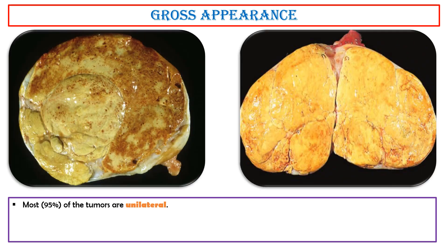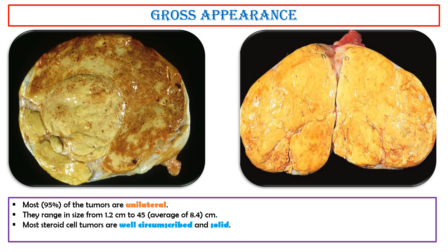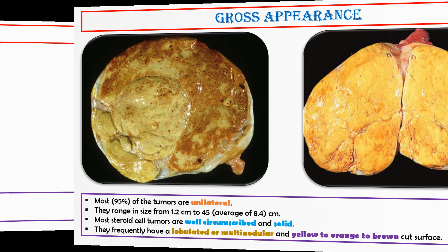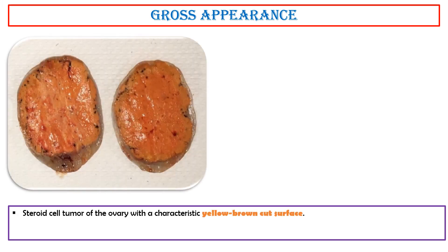Gross appearance. Most — 95% — of the tumors are unilateral. They range in size from 1.2 cm to 45 cm, with an average of 8.4 cm. Most steroid cell tumors are well circumscribed and solid. They frequently have a lobulated or multinodular yellow to orange to brown cut surface. This image shows a steroid cell tumor of the ovary with a characteristic yellow-brown cut surface.